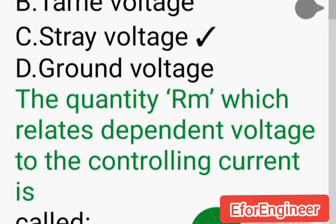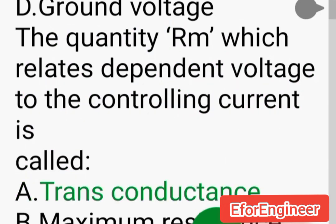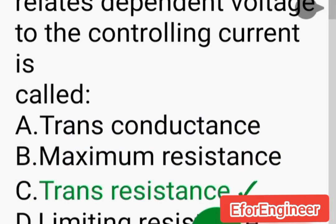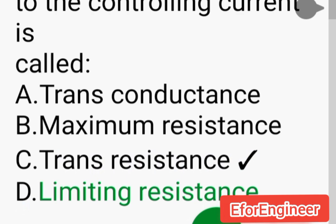The quantity which relates dependent voltage to the controlling current is called: A. Transconductance, B. Maximum resistance, C. Transresistance, D. Limiting resistance.